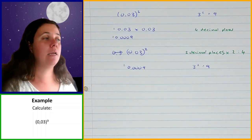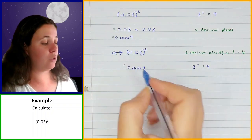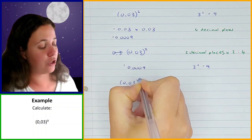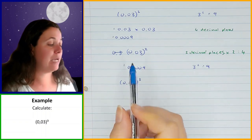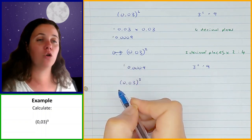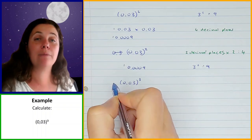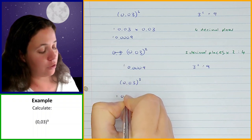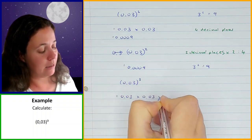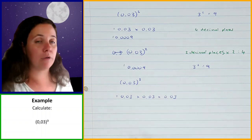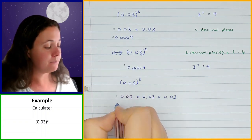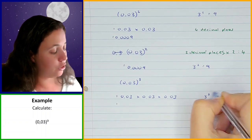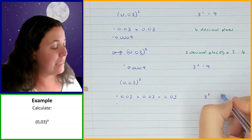Now let's look at another example. This one is very similar, but we are raising to the power of 3 — we're cubing 0.03. The same concept applies. Remember, when you cube it, it means you're multiplying three of them together: 0.03 times 0.03 times 0.03. So 3 times 3 times 3, or 3 cubed, is 27.